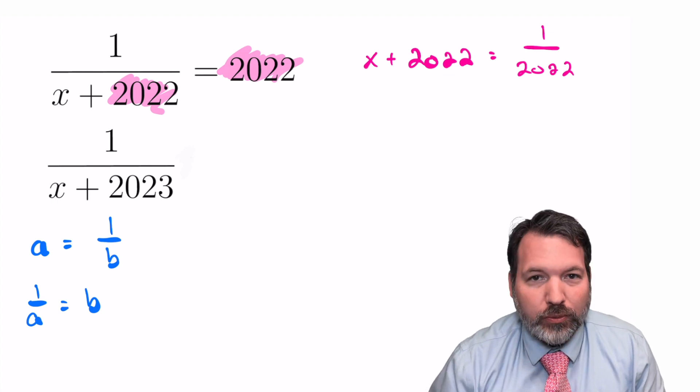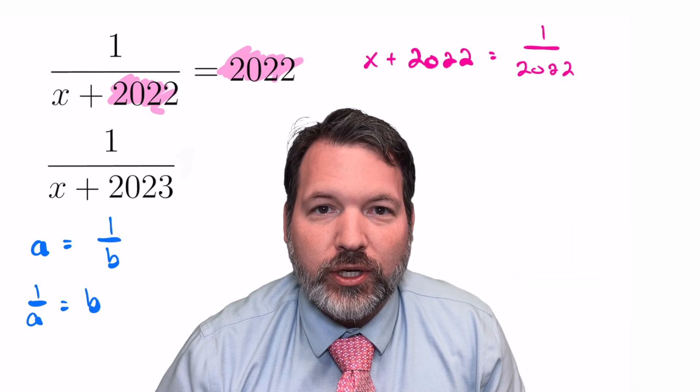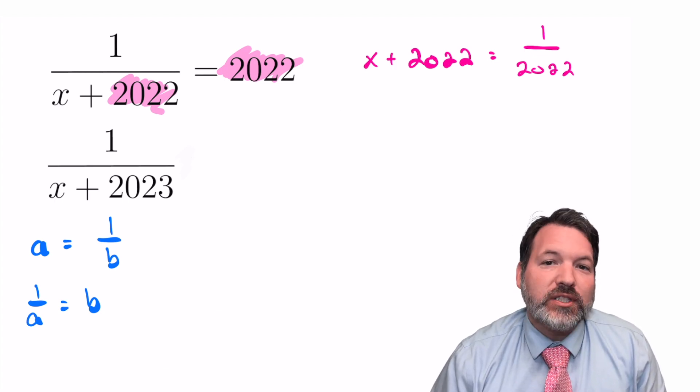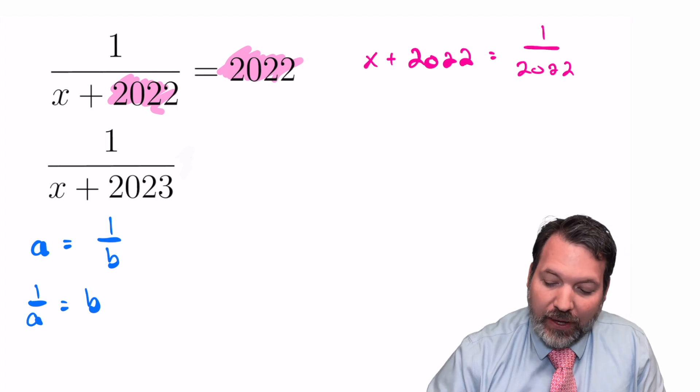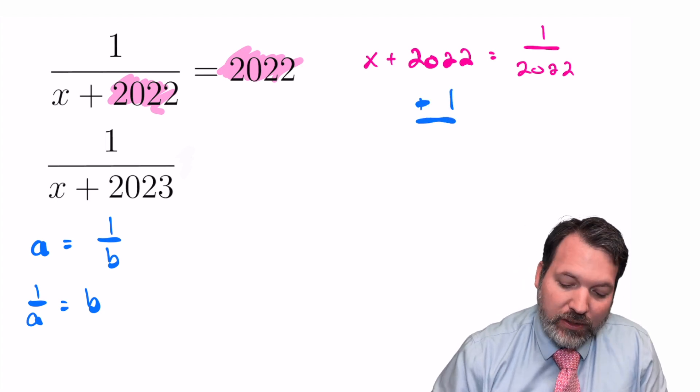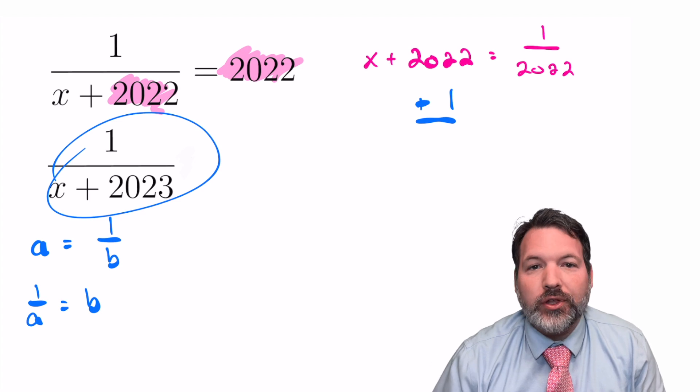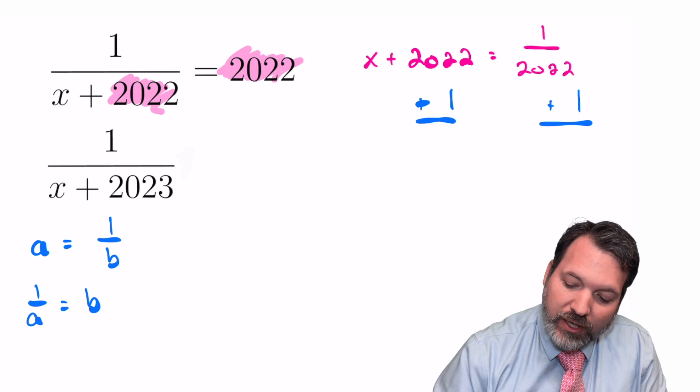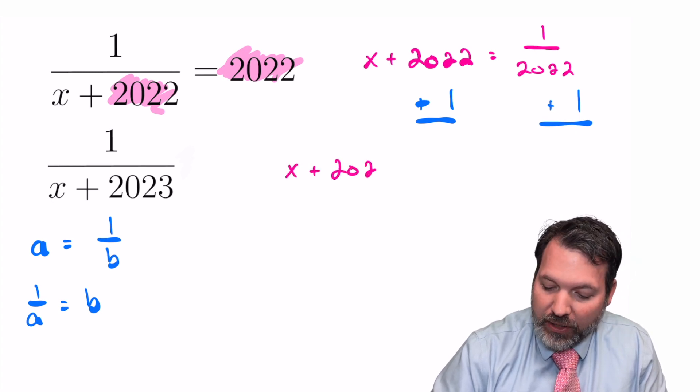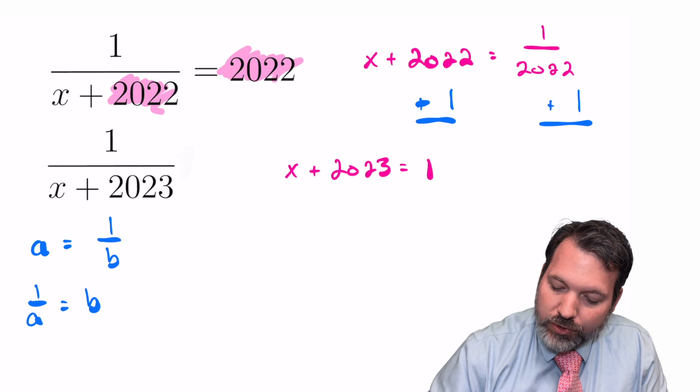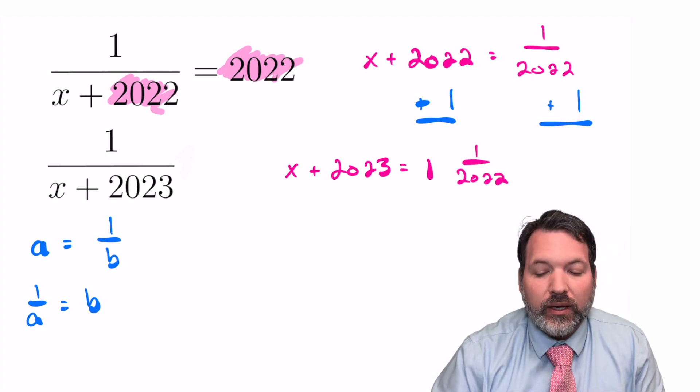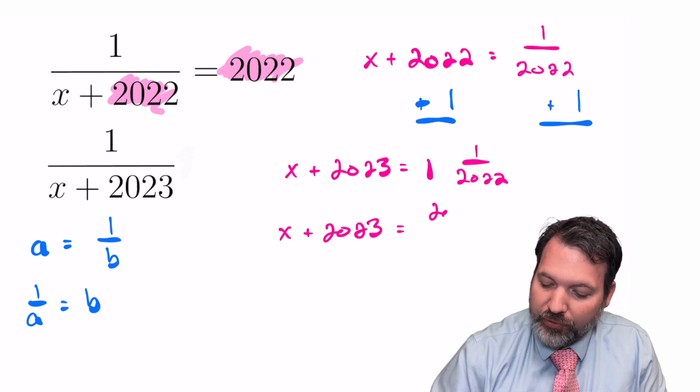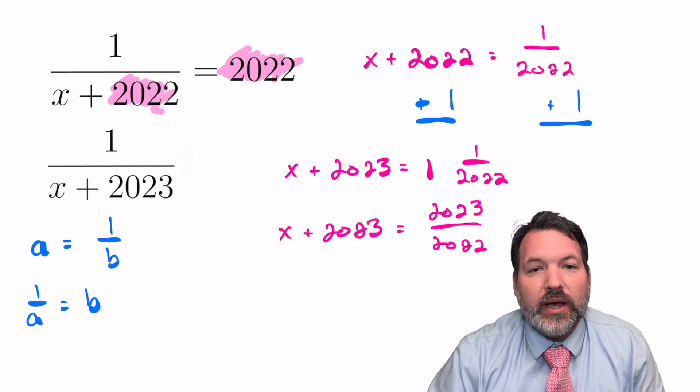At this point, we also want to take advantage of a special problem-solving technique called answer the question asked. We were not asked for x here, and so there's no special reason we have to solve for x. In fact, I think it's going to be a lot easier if we don't solve for x, but we attempt to solve for the value 1 over x plus 2023. To do that, let's add 1 to both sides of this equation. That gives us x plus 2023 equals 1 and 1 over 2022, which it's actually going to be more useful to us in a moment to express as the improper fraction 2023 over 2022.